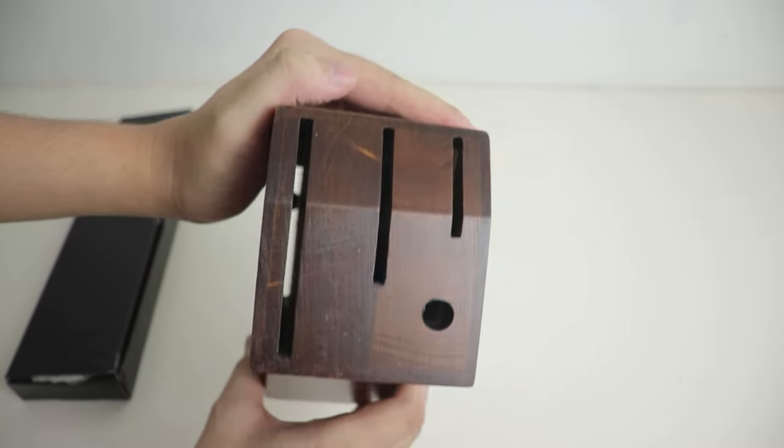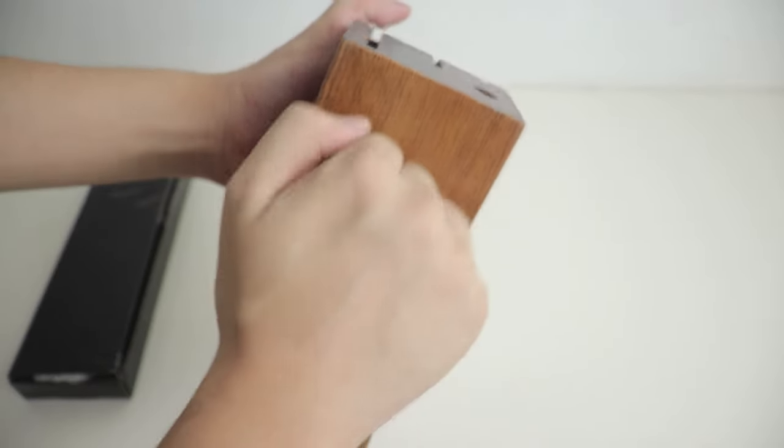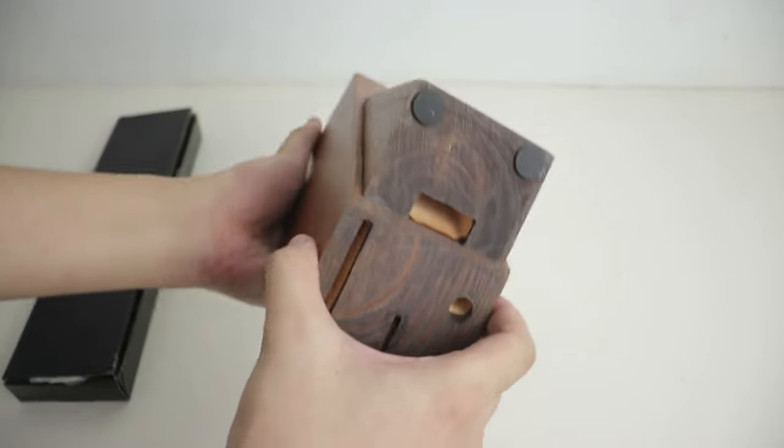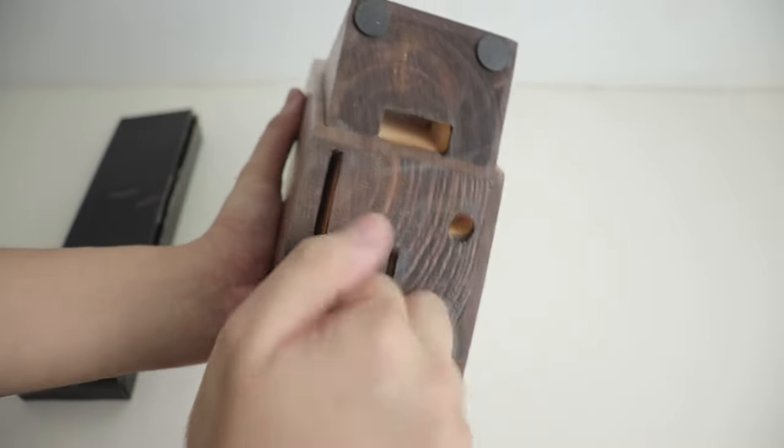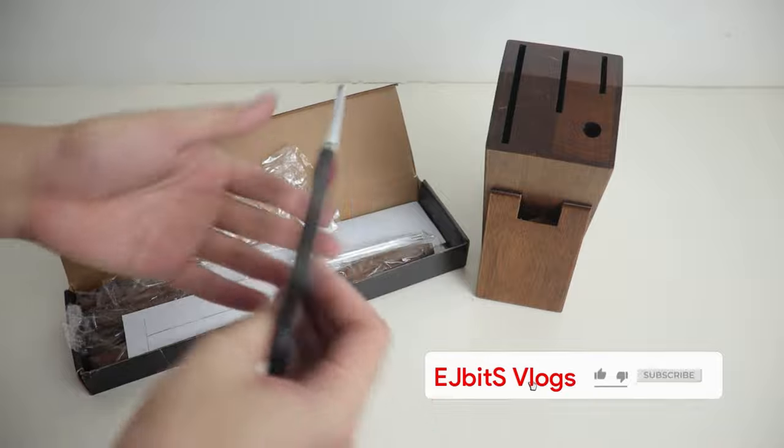As you can see, we have a nice elegant wooden holder. It has great color and as you can hear, it sounds very solid. The bottom has rubber feet to prevent it from sliding, and this is where you store your knives for proper organization.